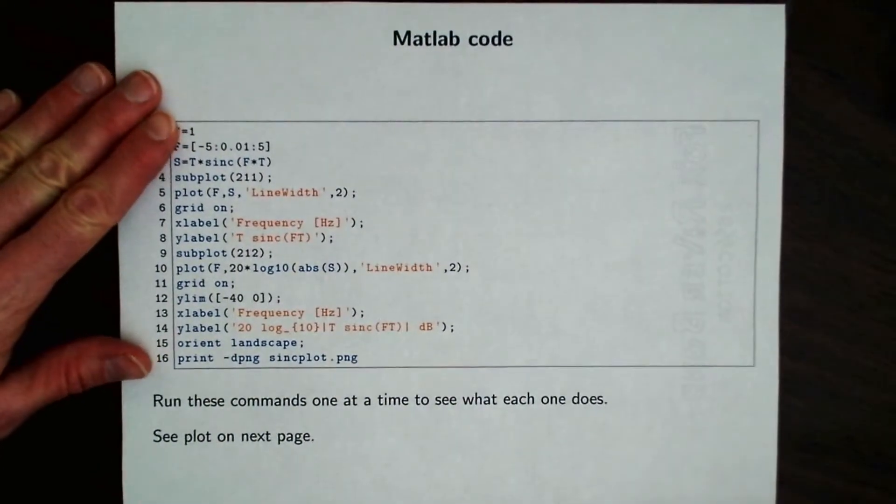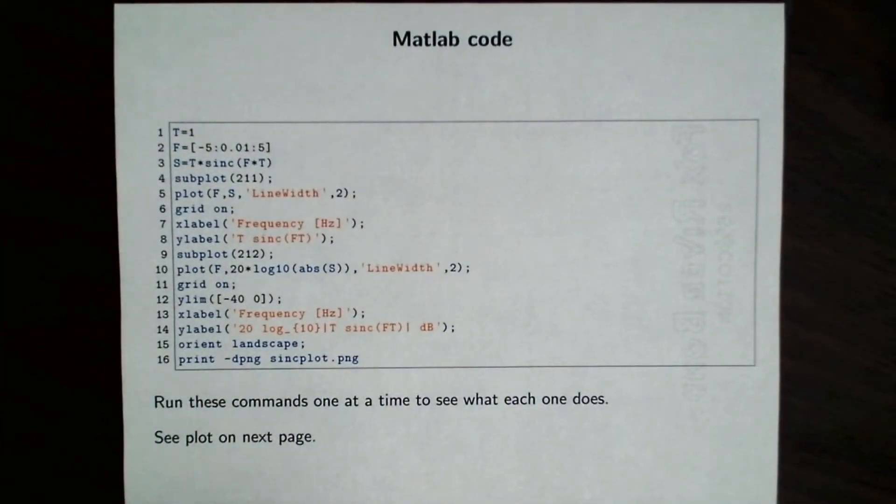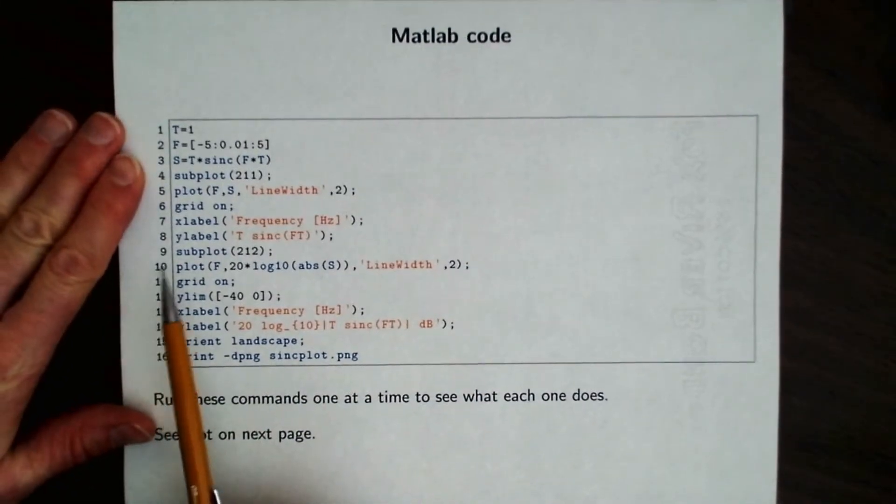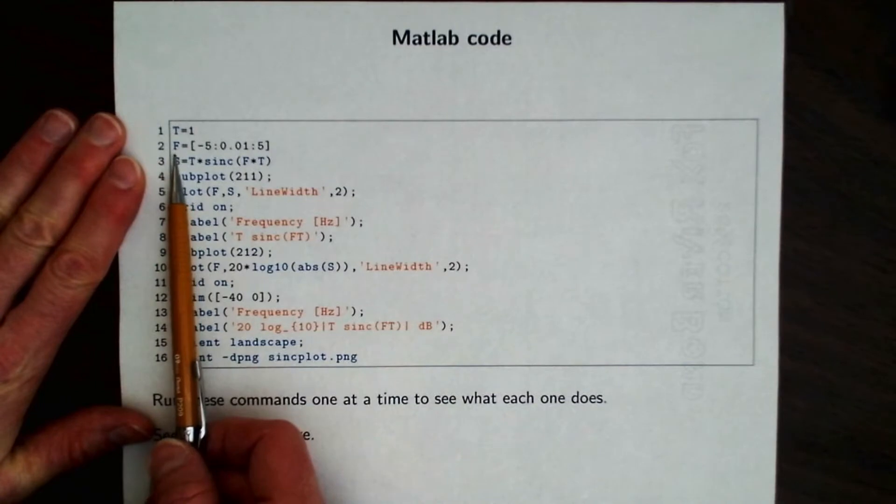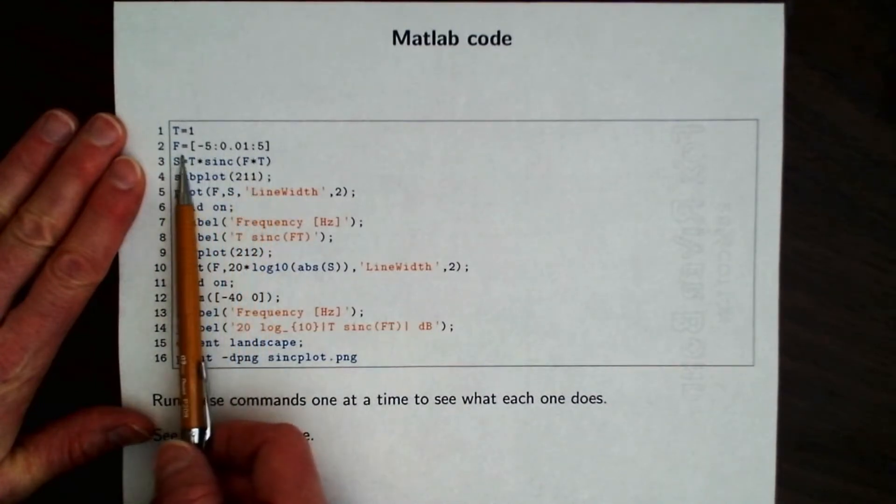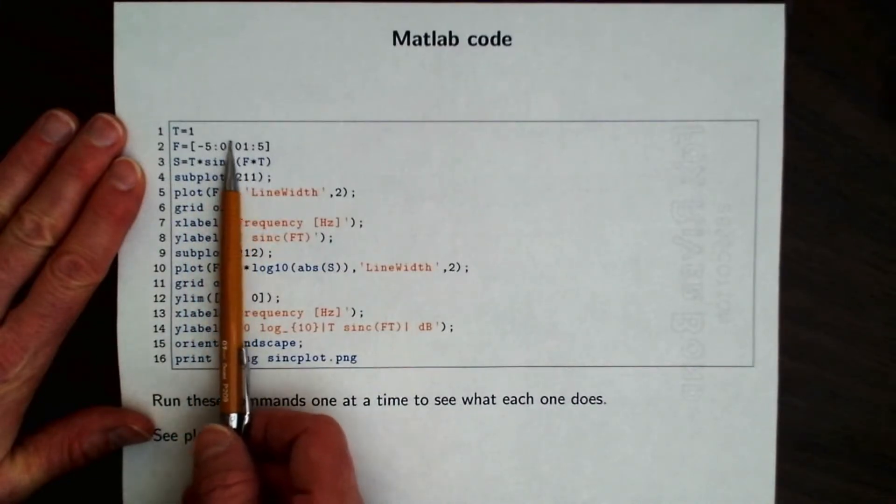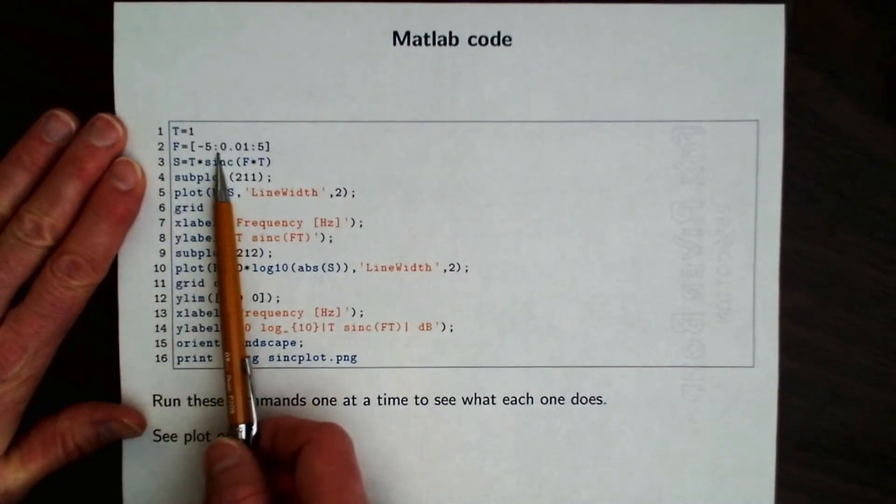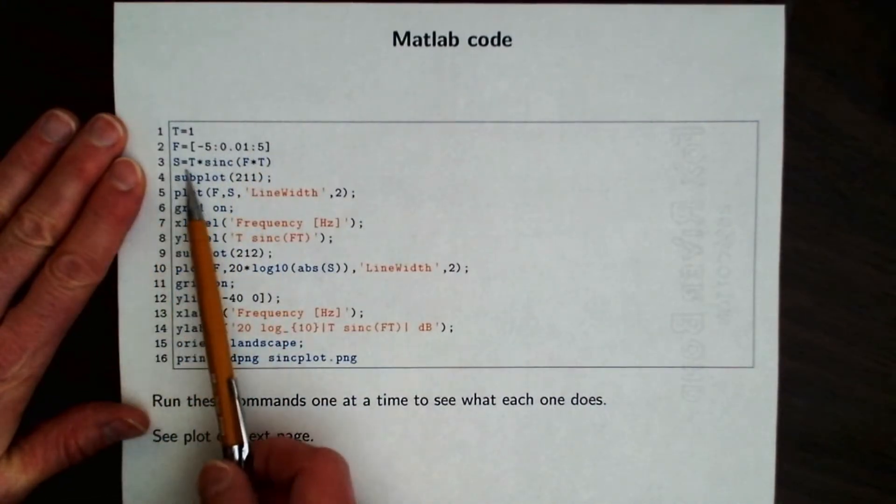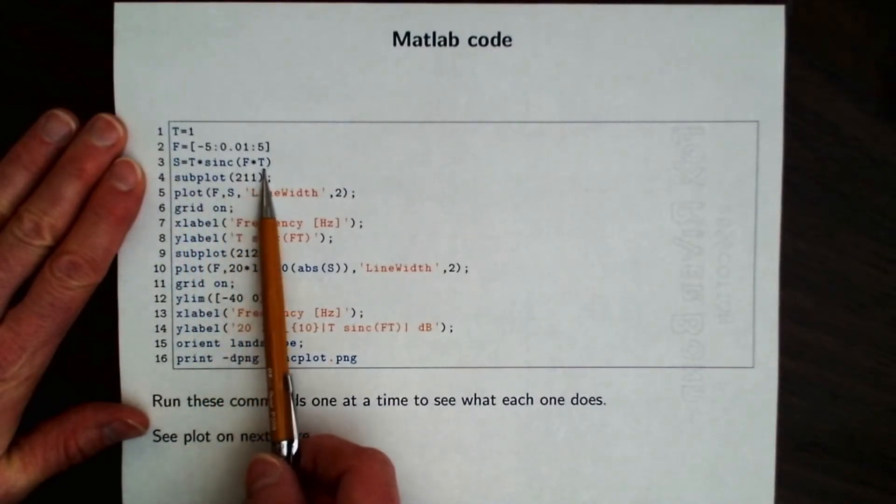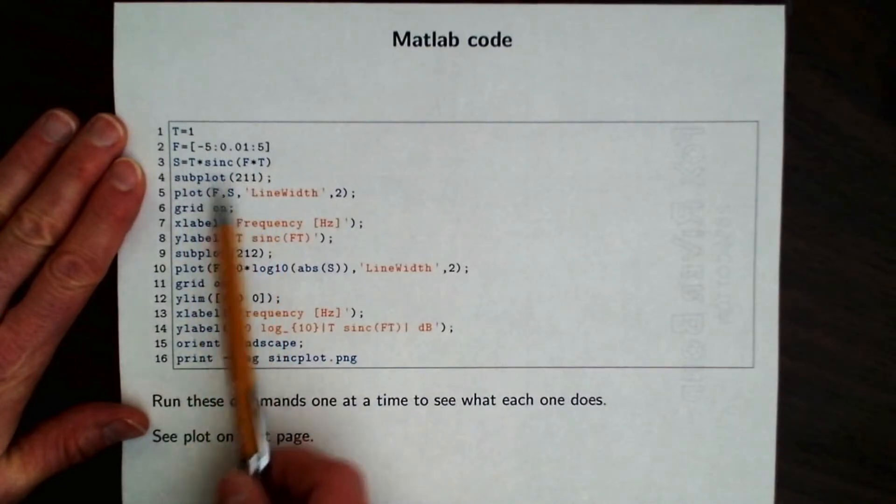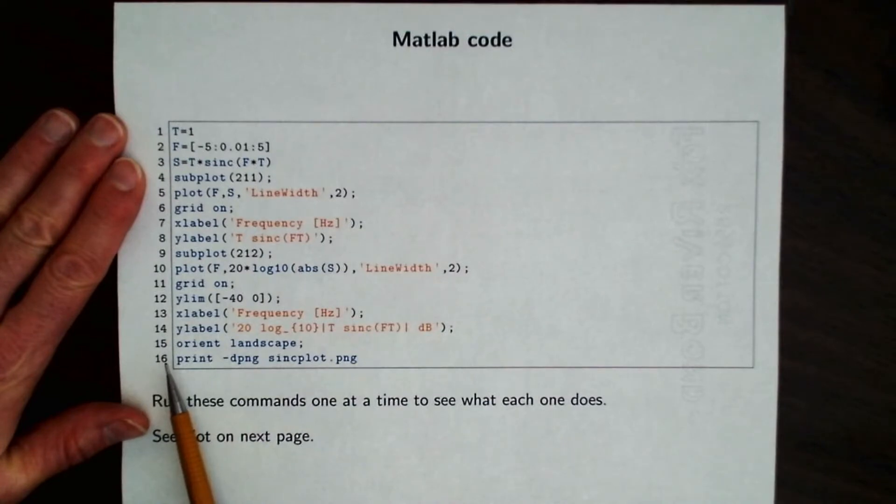Here's a bit of MATLAB code that makes plots of this function, both a linear amplitude and a log magnitude plot. So what I've done, let's just look at a few lines of this code. I've defined this variable T. Then I've sampled a bunch of values for frequency. Notice I'm starting at negative 5 hertz, going up to plus 5 hertz in steps of 1 hundredth of a hertz. So that's going to give me lots and lots of samples of this function. Then I'm going to evaluate the function: I'll take T times sinc of f times t. So that's really just the same function we just derived.